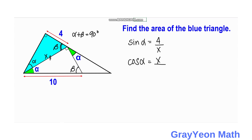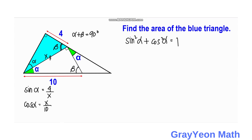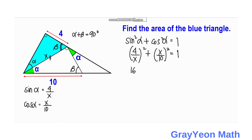For the white right triangle, the cosine of alpha equals x over 10 — adjacent over hypotenuse. We now use the Pythagorean identity: sin²α + cos²α = 1. Substituting, sine alpha is 4 over x, so we square that, and cosine alpha is x over 10, so we square that too. This gives us 16 over x² plus x² over 100 equals 1.